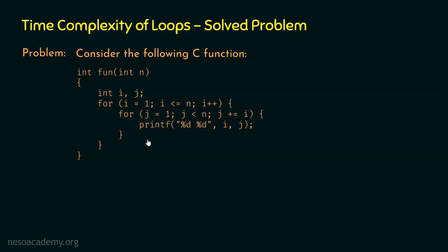We need to do proper analysis to find the time complexity of this dependent nested loop structure. Because of the use of variable i in the inner loop, we need to analyze both for loops carefully. This means for each iteration of the outer for loop, we need to understand the behavior of the inner for loop. Let's do the proper analysis to find the time complexity of this nested for loop structure.